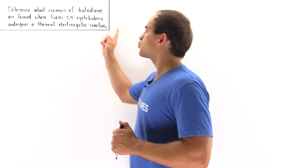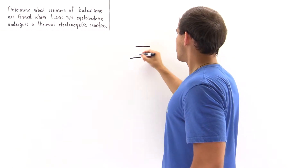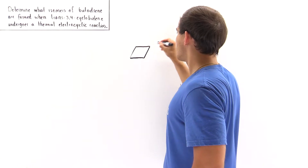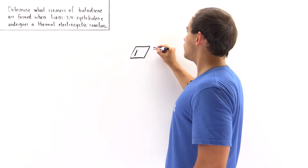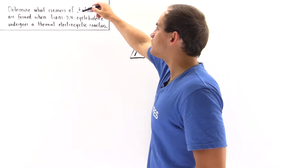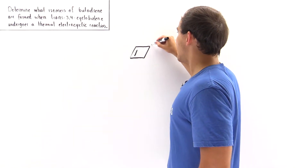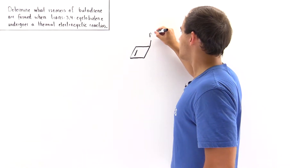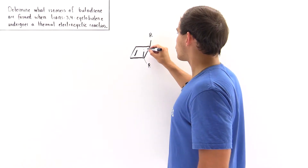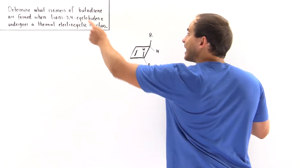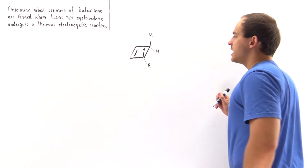Let's begin with our trans-3,4-cyclobutene, the starting material. We have a four-membered ring with a pi bond between carbon 1 and carbon 2. On carbon 3 and carbon 4, we have an R group that points in opposite directions — on carbon 3 the R group points up and the H points down, while on carbon 4 the R group points down and the H points up. This is trans-3,4-cyclobutene, where the 'ene' indicates a pi bond between carbon 1 and carbon 2.